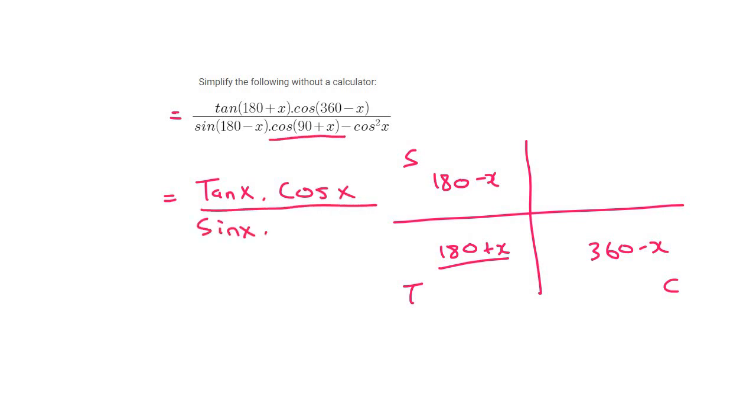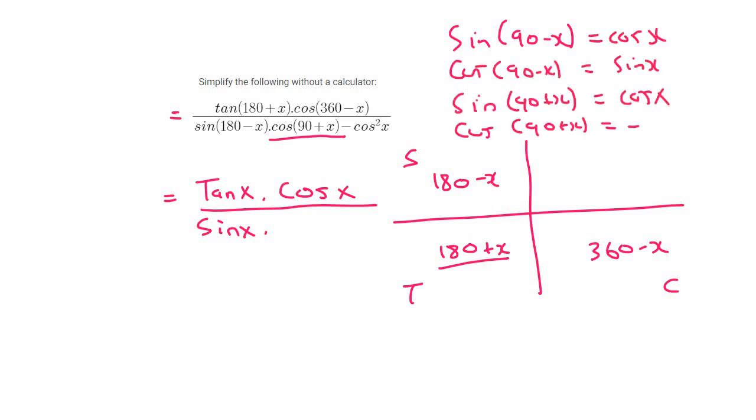Now cos 90 plus is a co-function. Remember guys, there are four co-functions. Write them down if you need to. Here they are. That's the first one, the next one, and then this last one always has a negative. It's quite a weird one. So that's the one we have.